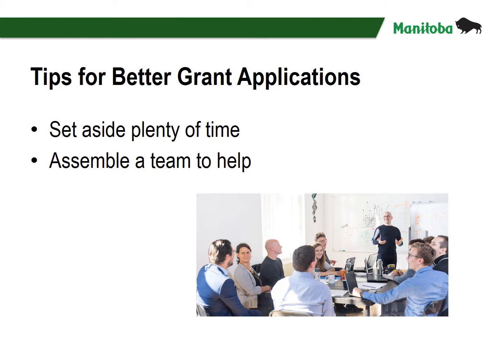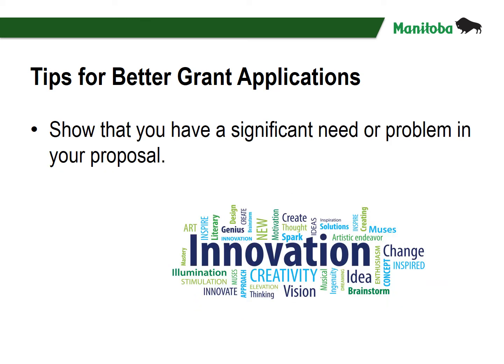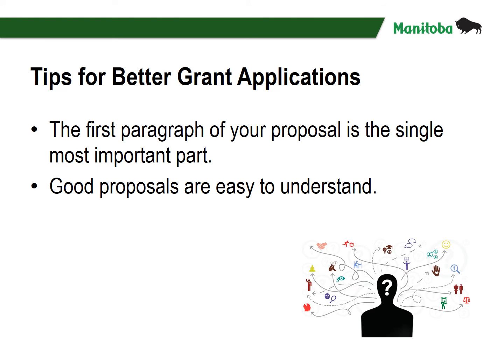Set aside plenty of time — don't underestimate how much time it takes to write a competitive application. Assemble a team to help; don't try to do the whole thing on your own. Get people to track down estimates, talk to grant makers, and collect documents. Show that you have a significant need or problem in your proposal. Don't assume that grant reviewers understand your project or its importance to your community. The first paragraph of your proposal is the single most important part. If the grant reviewer has a good idea of the direction from reading the abstract, it creates an important first impression. Good proposals are easy to understand — if you are short and to the point and have answered the key questions, your grant will be viewed as understandable and fundable.